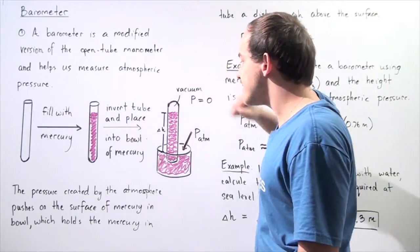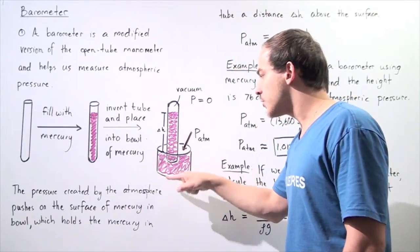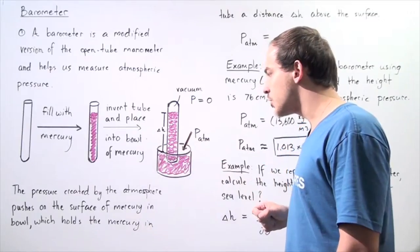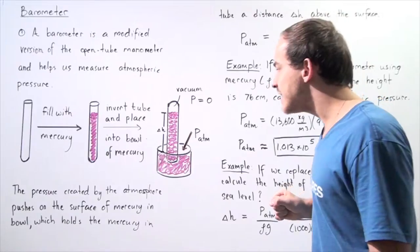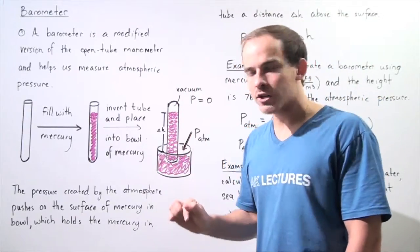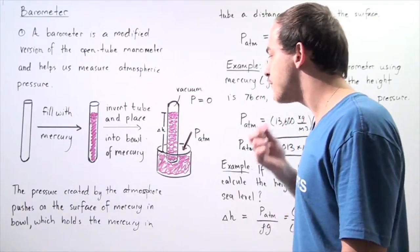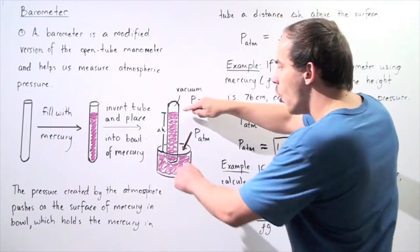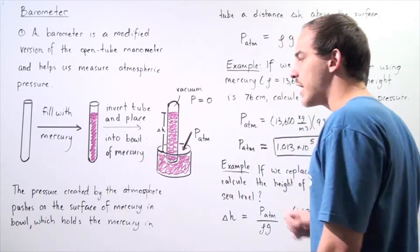The pressure inside the space is zero and notice that the bowl, the mercury, the surface of our mercury is exposed to the atmosphere and so that means the atmosphere pressure will create a force that will act on the surface of the mercury and this force will in turn hold a certain amount of mercury up as shown in the diagram.